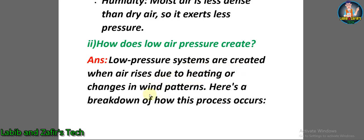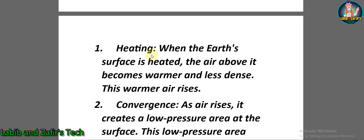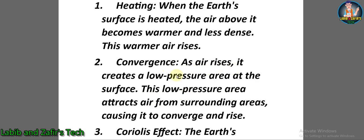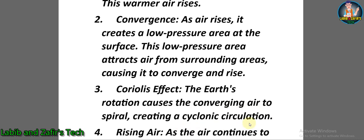Descriptive question number two: How does low air pressure create? Answer: Low pressure systems are created when air rises due to heating or changes in wind patterns. Number one — heating: when the Earth's surface is heated, the air above it becomes warmer and less dense and rises. Number two — convergence: as air rises, it creates a low pressure area at the surface, attracting surrounding air to converge and rise. Number three — Coriolis effect: the Earth's rotation causes the converging air to spiral, creating a cyclonic circulation.